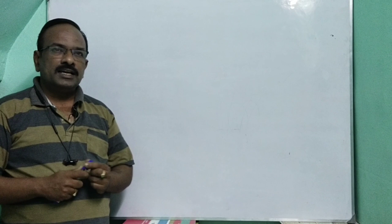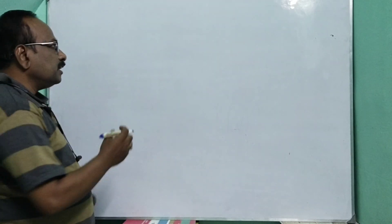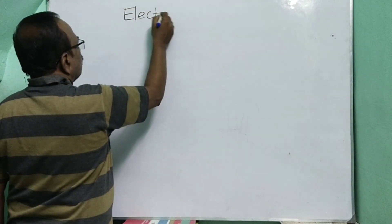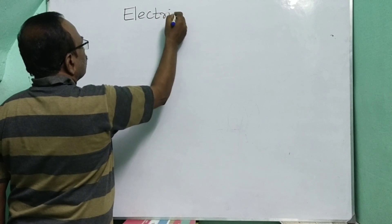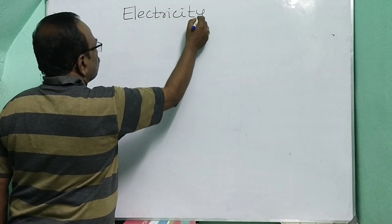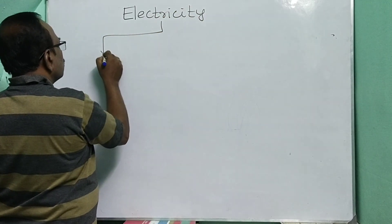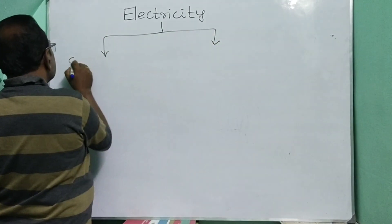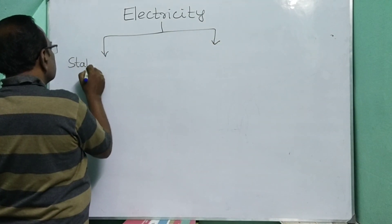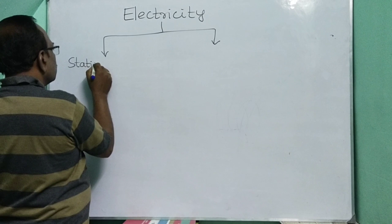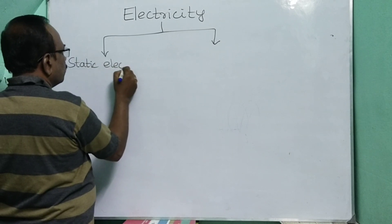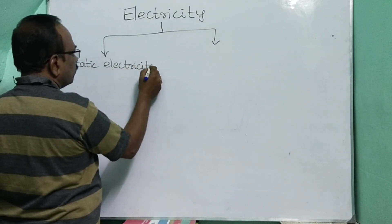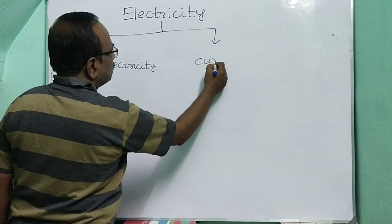Electricity can be classified into two types: static electricity and current electricity.